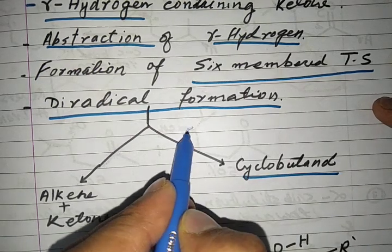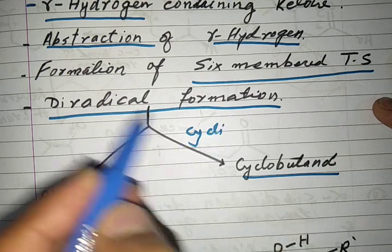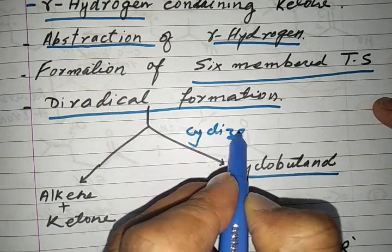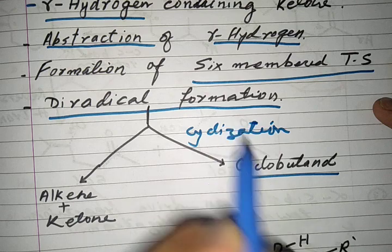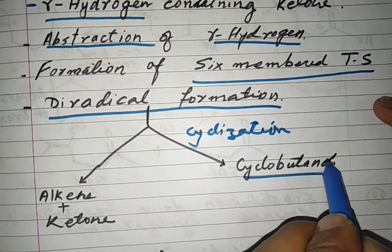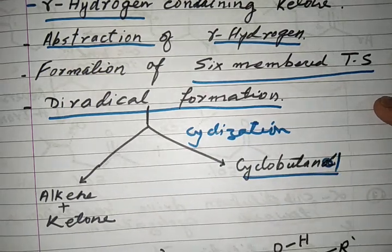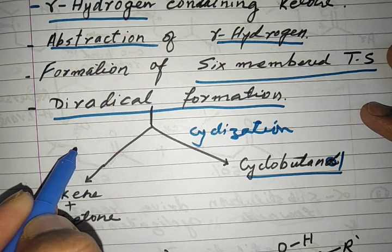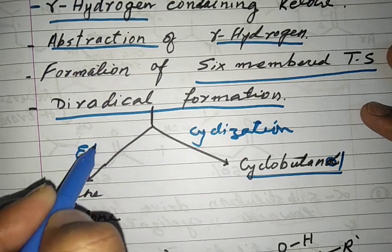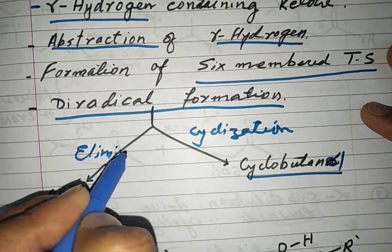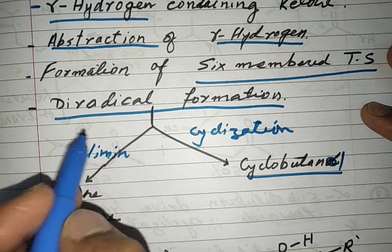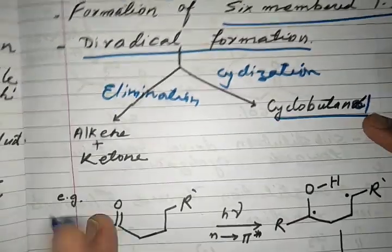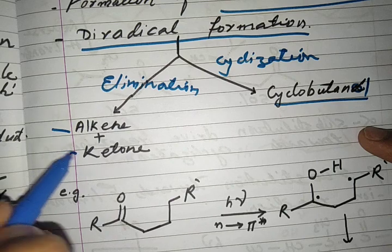If the diradical undergoes cyclization, it will form cyclobutanol. If the diradical undergoes elimination — meaning breaking down — then it will form an alkene and a ketone.